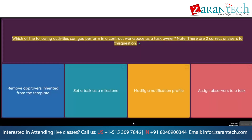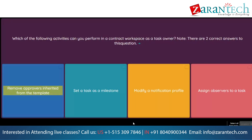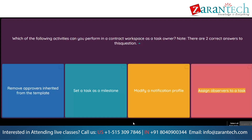Question: Which of the following activities can you perform in a contract workspace as a task owner? Note: there are two correct answers to this question. Option 1: Remove approvers inherited from the template. Option 2: Set a task as a milestone. Option 3: Modify a notification profile. Option 4: Assign observers to a task.